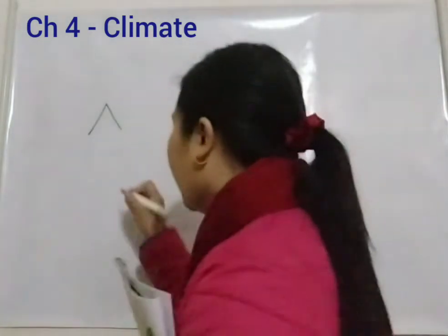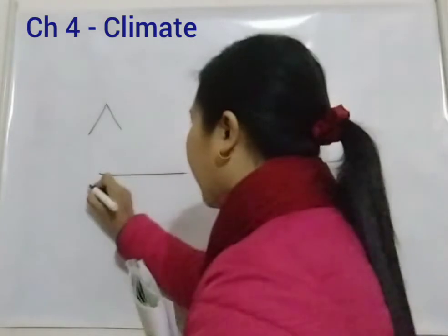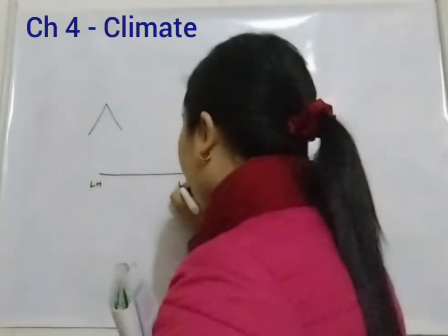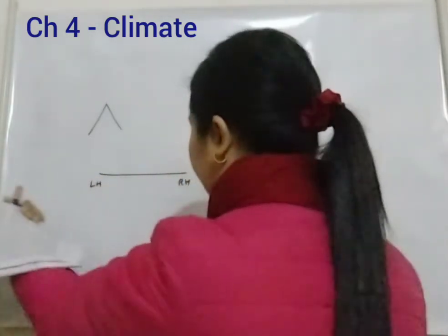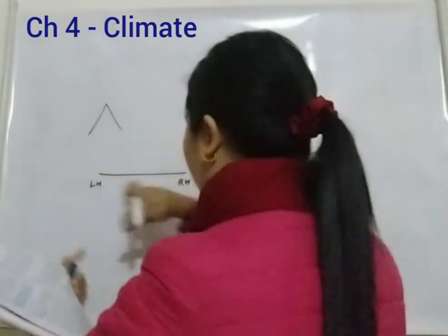Let us talk about latitude. Latitude refers to imaginary horizontal lines drawn on the globe. So, what is this line? It is an imaginary horizontal line. We are going to start with this concept.